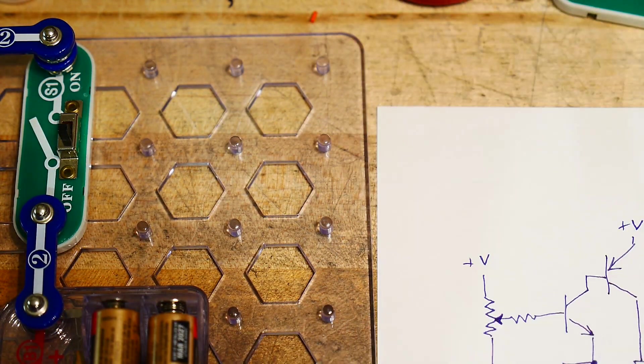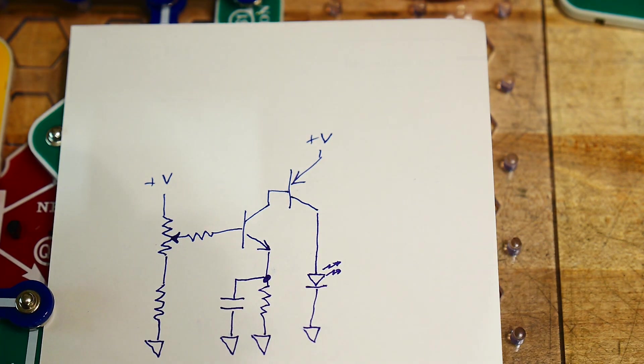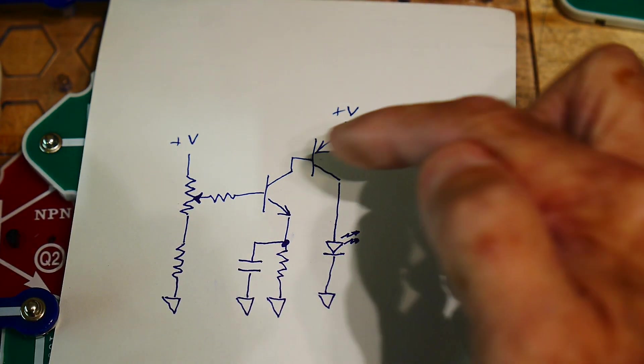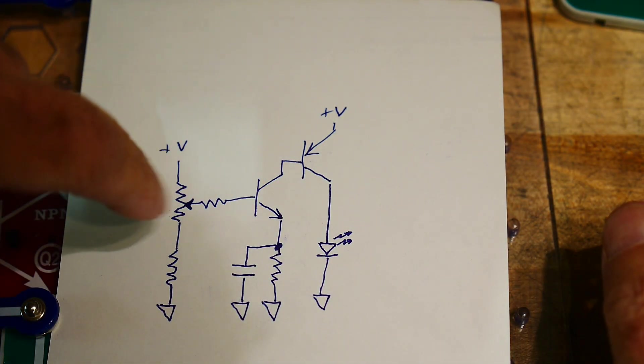I went ahead and redrew the schematic. I wish they would have done this in the kit. This is the schematic here - there's a PNP transistor and an NPN transistor with some biasing for the base.